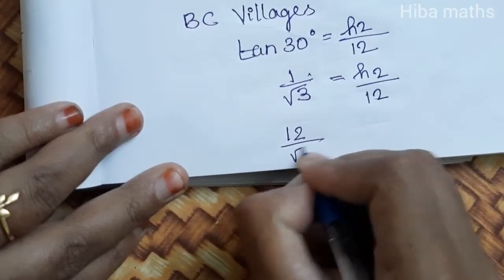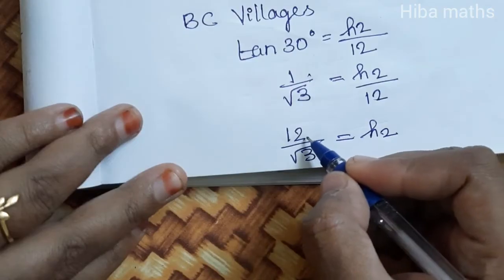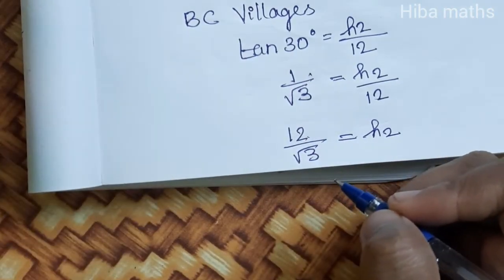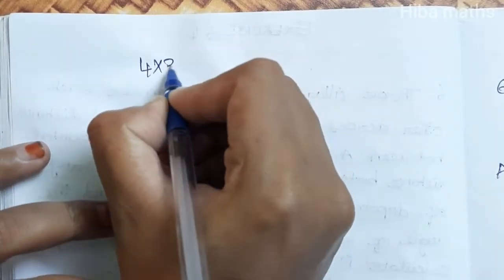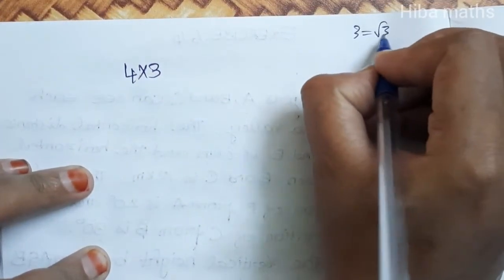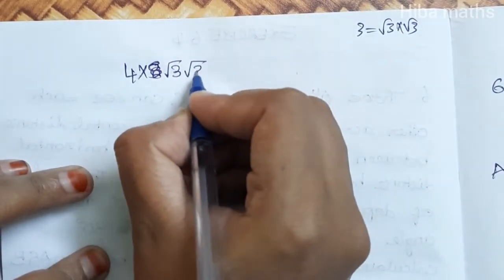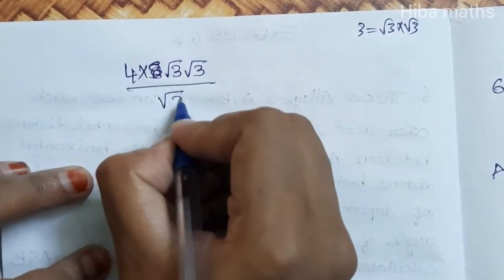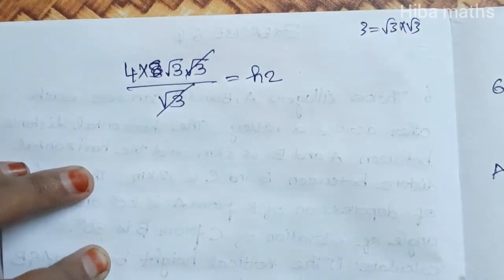Tan 30 value is 1/√3, so 1/√3 equals h2 by 12. Therefore 12/√3 equals h2. We can split 12 as 4 times 3. And 3 can be written as √3 times √3. So root 3 cancels out.